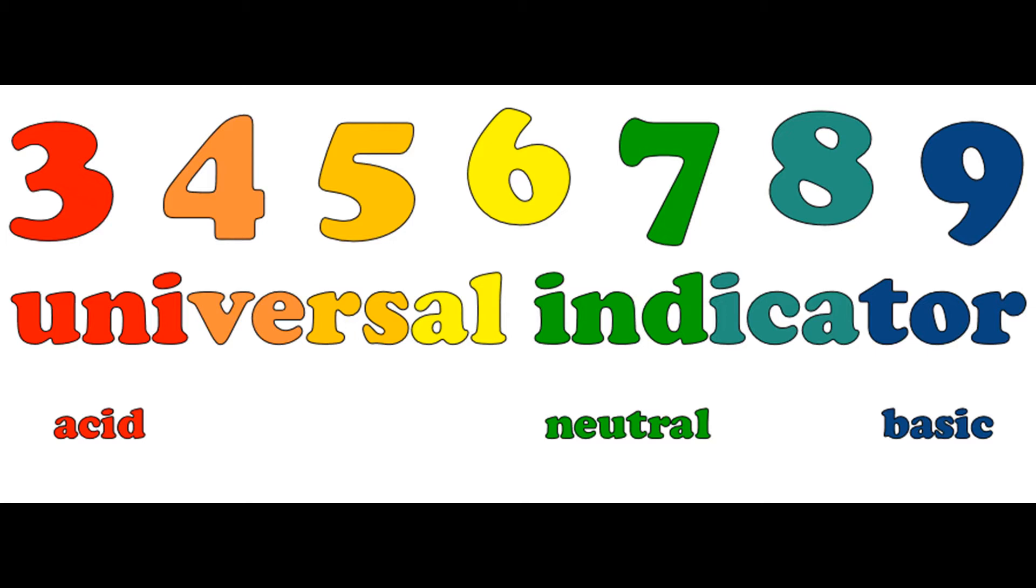The further the pH value gets below 7, the more acidic the substance is, while the further above 7 the pH gets, the more basic the substance is.